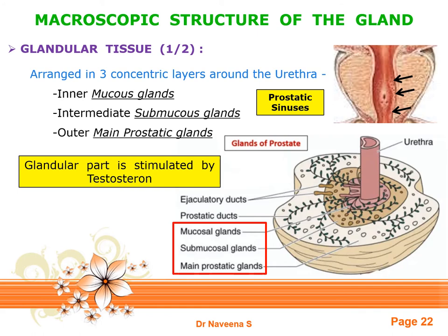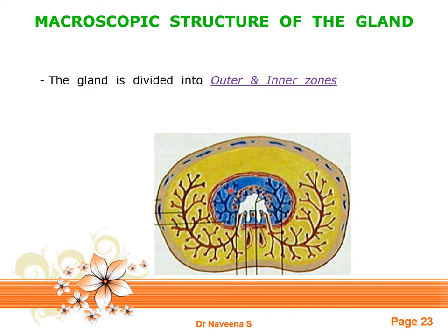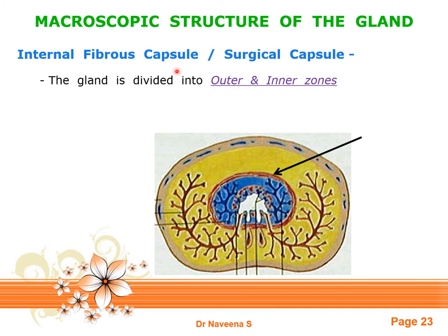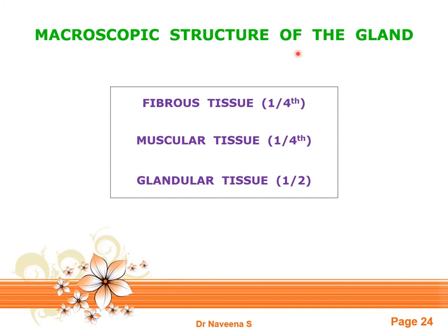In cross-section, the prostatic parenchyma is divided into two zones — an outer zone and an inner zone — by a thin layer of fibrous tissue between the outer main prostatic glands and the intermediate submucosal glands, known as the internal fibrous capsule or surgical capsule. The outer zone is frequently affected by carcinoma of the prostate, whereas the inner zone is frequently affected by benign prostatic hypertrophy, which is why this layer is termed the surgical capsule.